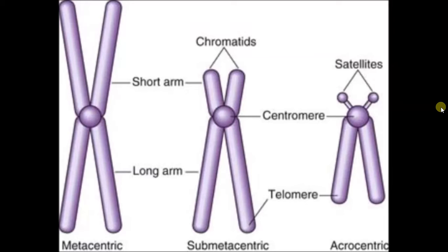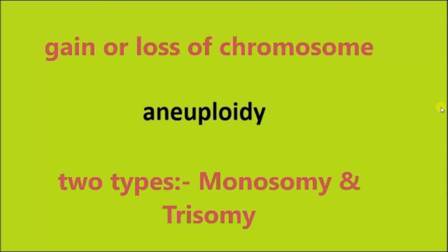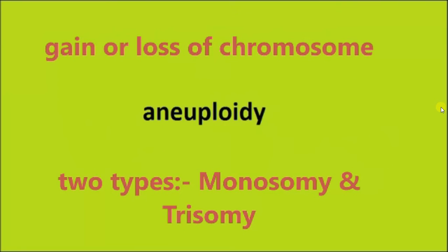Euploidy means when a cell has a multiple of 23 chromosomes, and it has two types: triploidy and tetraploidy, which will be discussed in cytogenetics part two. Aneuploidy is the gain or loss of a chromosome. There are two types: monosomy and trisomy, also to be discussed in part two.